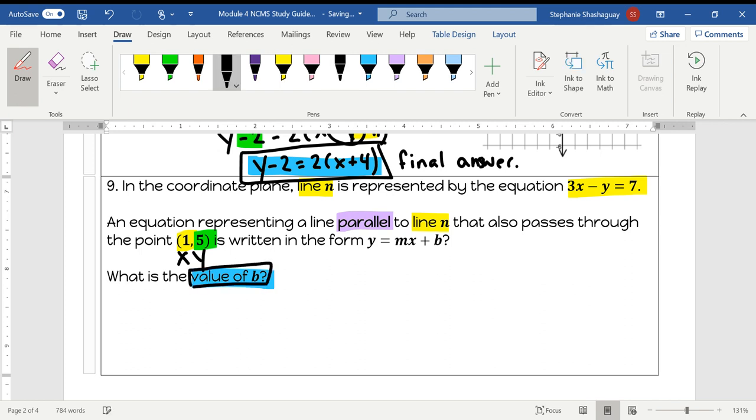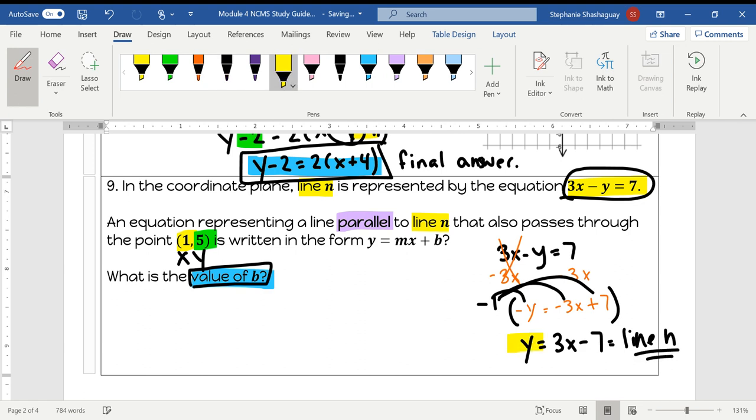And I need to find the value of B. The first thing we need to do is write this equation in slope-intercept form. So if we have 3X minus Y is equal to 7, I am going to subtract 3X from both sides. So this cancels out and I end up with negative Y is equal to negative 3X plus 7. Now I need to get rid of the negative, so if I multiply the whole equation by negative 1, then this becomes a positive Y, this becomes a positive 3X, and this becomes a negative 7. So this is just your line N. So if this equation right here is my line N, I know that the slope of line N is equal to 3, and so the slope of my parallel line will also be equal to 3.